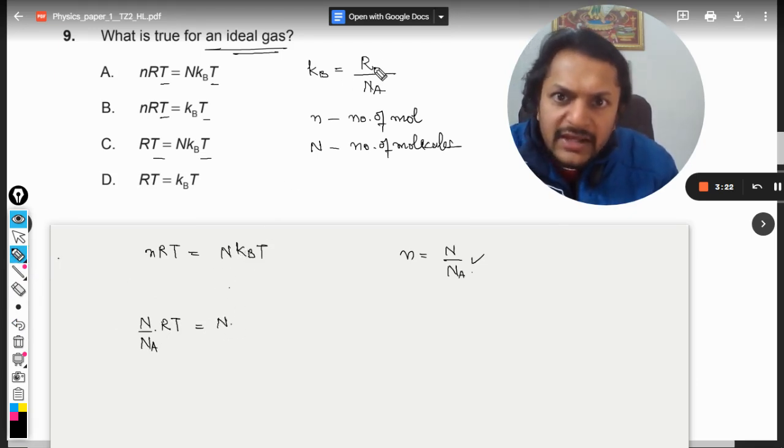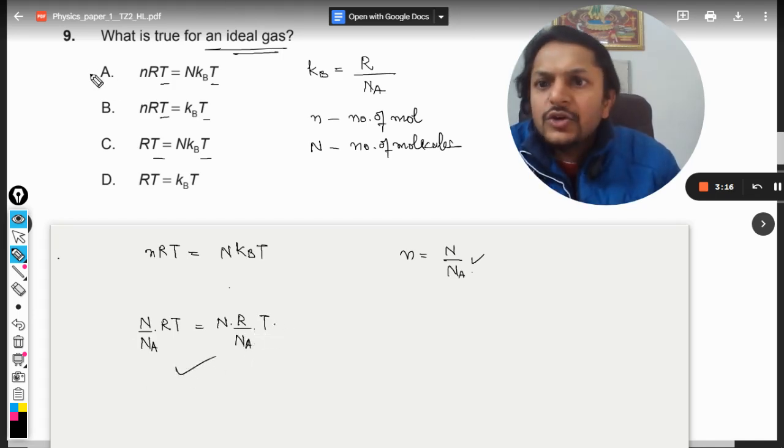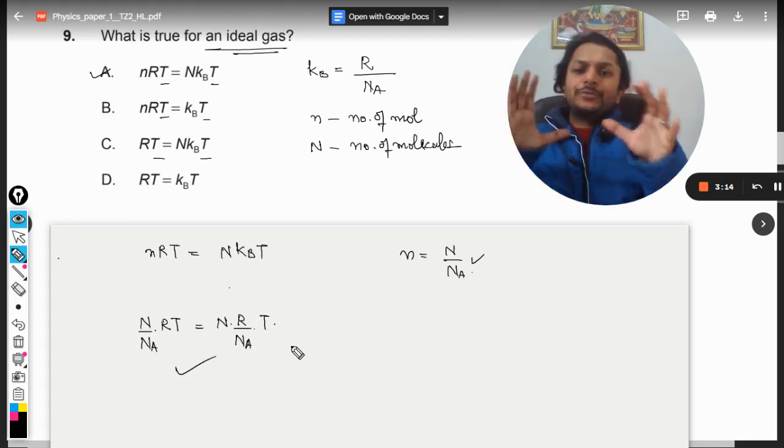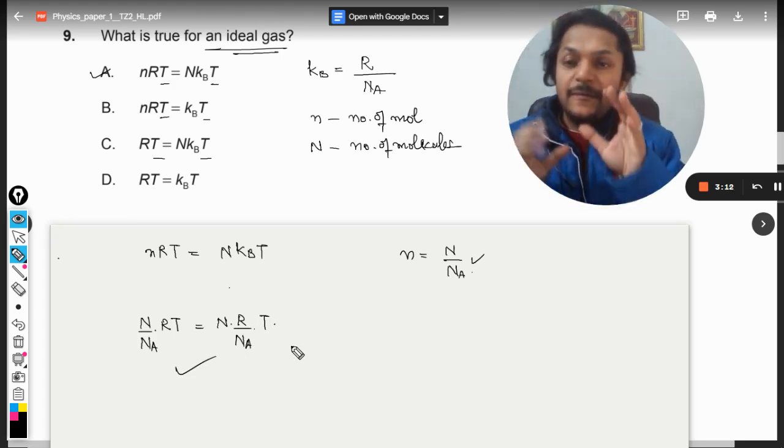And KB can be written as R divided by NA into T. And there you are. So we know that option A is coming out to be correct. Hence A is the right answer.